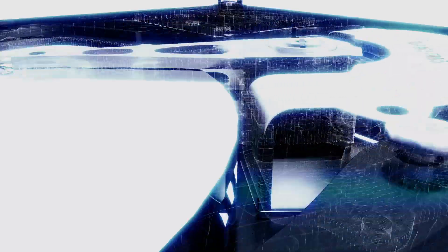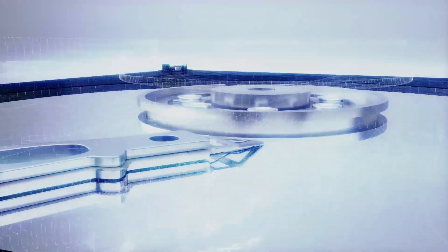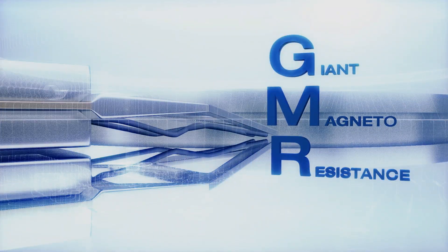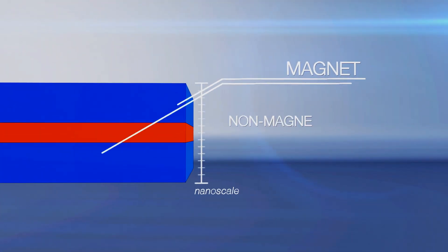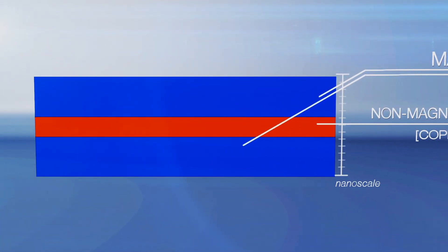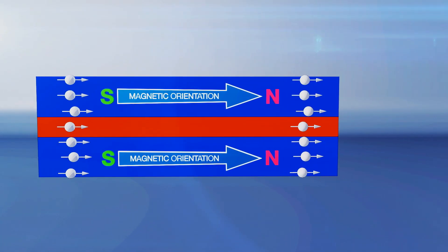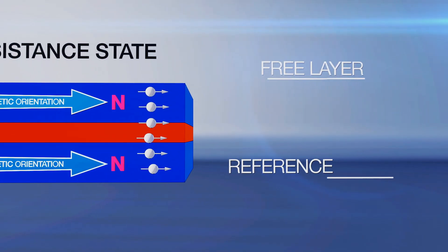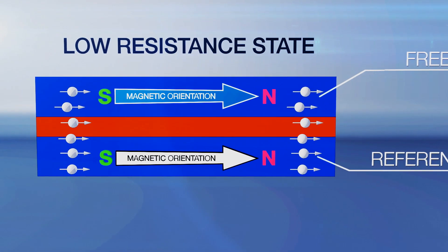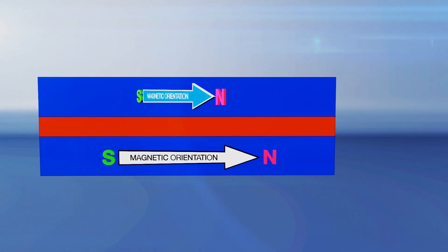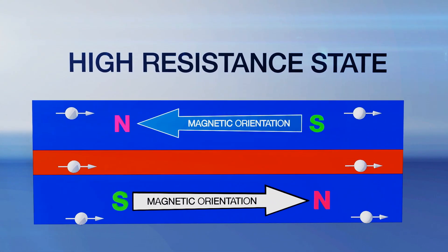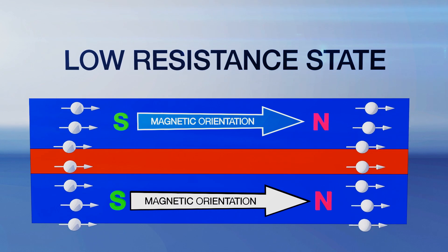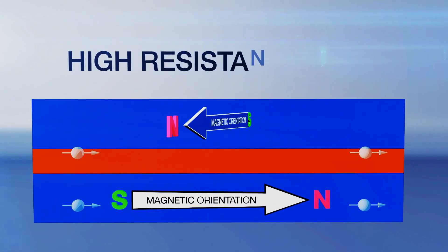One of the discoveries which has revolutionized modern sensors and digital data storage devices is the giant magnetoresistance effect. Imagine two permanent magnets separated by a non-magnetic metal such as copper. If we fix the magnetic orientation of the lower layer and then switch the orientation of the top layer, there is a giant change in the resistivity across these layers. This allows for detecting even small magnetic fields, which makes modern magnetic sensors highly sensitive.